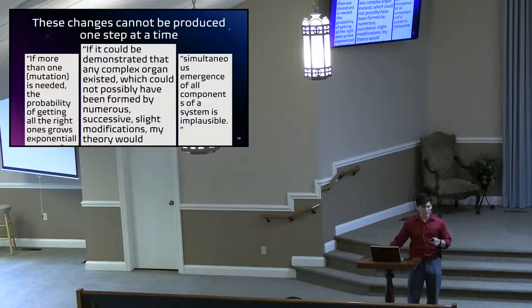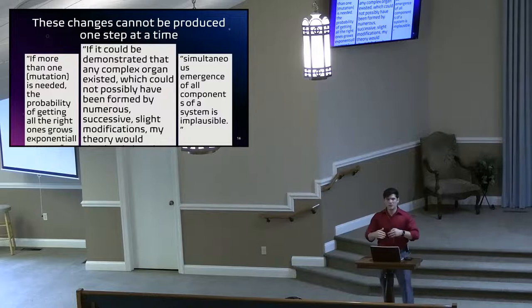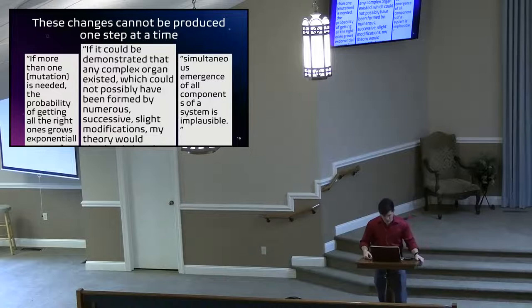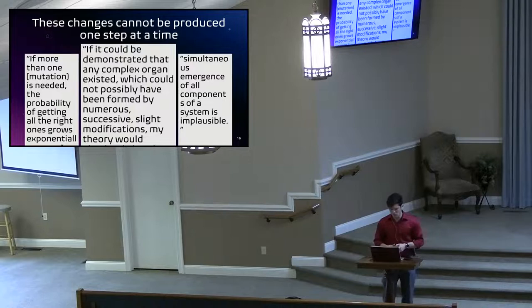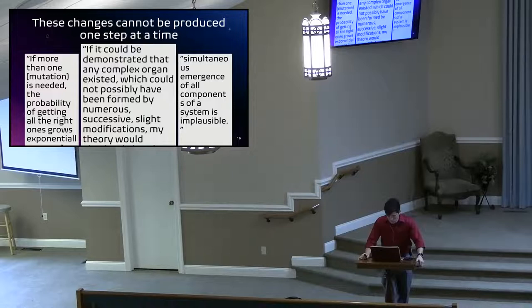The other thing: when you read Darwin's book, all these steps and changes occur one at a time — these things build on top of another process. Michael Behe says: 'If more than one mutation is needed, the probability of getting all the right ones grows exponentially worse than they already were.' And this is Charles Darwin himself saying in his book: 'If it could be demonstrated that any complex organ existed which could not possibly have been formed by numerous successive slight modifications, my theory would absolutely break down.'